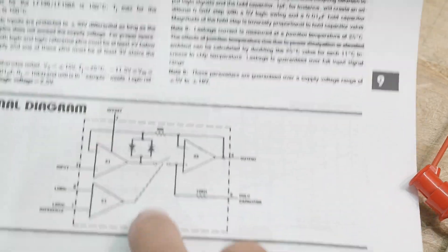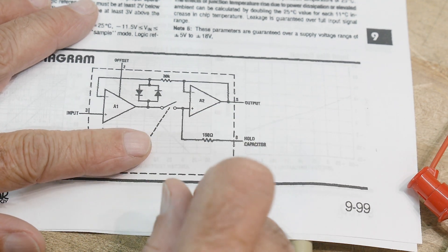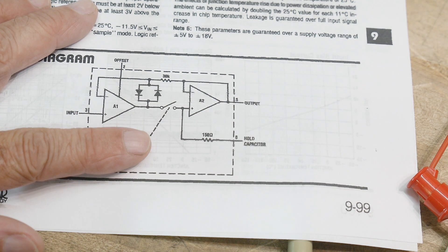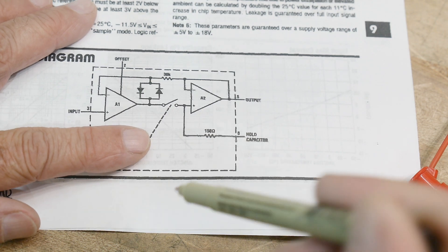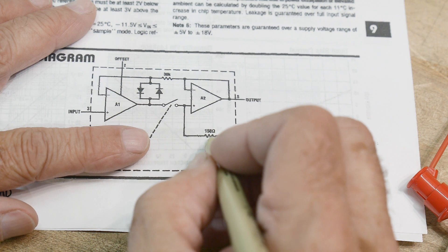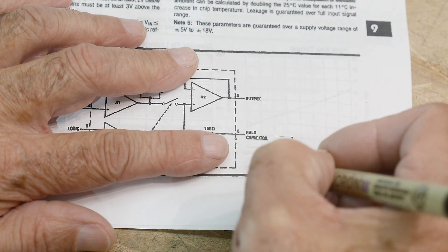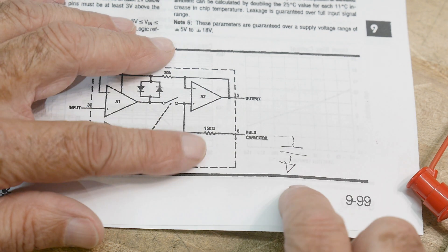So in this diagram you can see that there's an input and an output, and then there's a break. There's an analog switch between the two, and that analog switch comes here through a 150 ohm resistor, and then you can put a capacitor out here to hold that voltage.